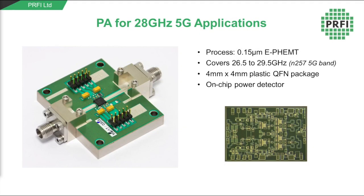Here's a picture of the PA which is designed for use in the N257 5G band. That's from 26.5 to 29.5 GHz. The PA is fabricated on an enhancement mode gallium arsenide process and has been assembled into a plastic QFN package that measures 4 by 4 millimeters.